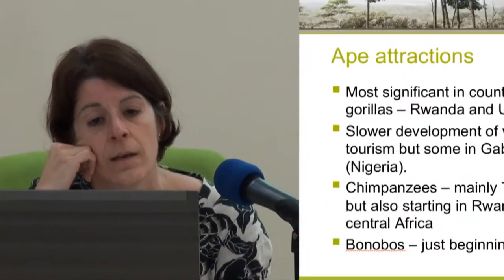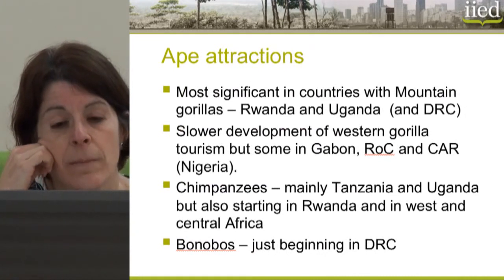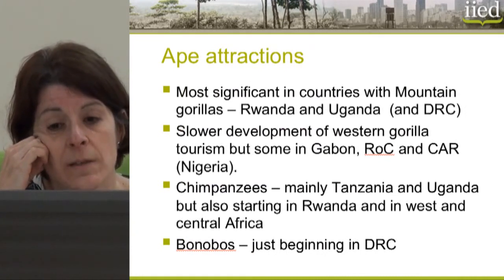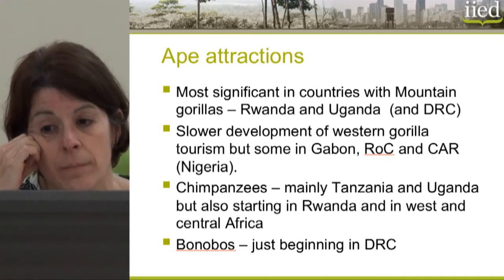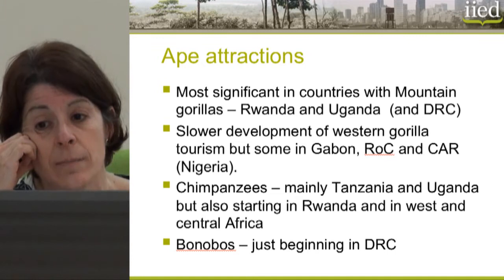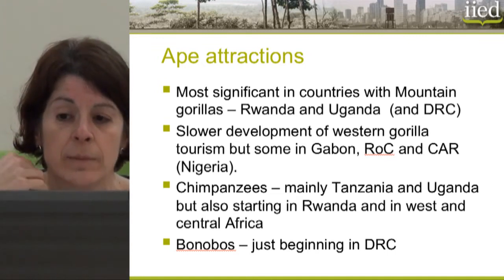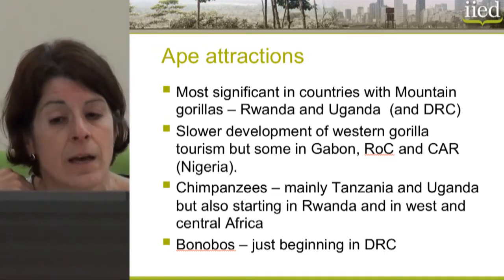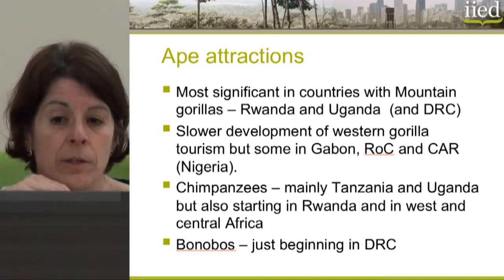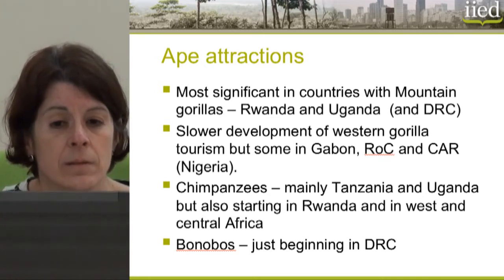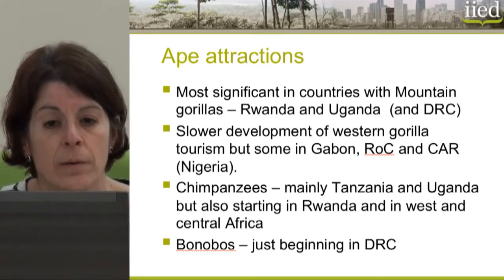Nevertheless, apes are major tourist attractions in a number of countries. They are most significant in countries with mountain gorillas — specifically Rwanda and Uganda, but also DRC. However, DRC is less prominent due to conflict, instability, and the limited accessibility of gorillas to tourists. Rwanda and Uganda are the countries where gorilla tourism is most well known and where its economic impacts have been most documented.